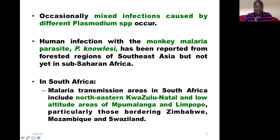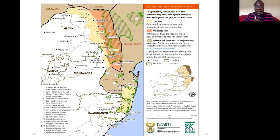Specifically in South Africa, malaria transmission areas include the northeastern part of KwaZulu-Natal and the low-altitude areas in Mpumalanga and Limpopo, especially provinces bordering countries like Zimbabwe, Mozambique, and Swaziland. All those South African provinces bordering those areas are at high risk of developing malaria.